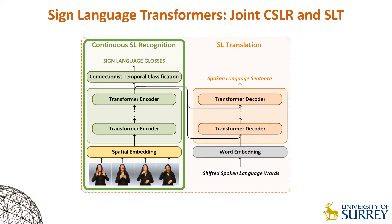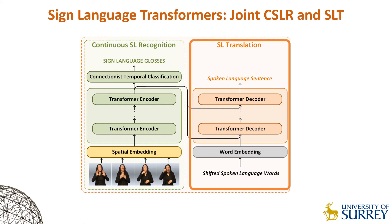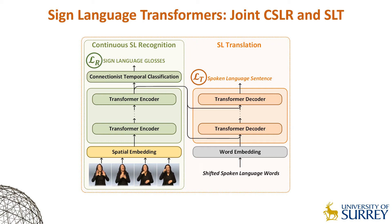We trained the transformer encoders using gloss annotations to recognize sign sequences from continuous videos. As we are utilizing the CTC loss function, we do not require frame-level gloss alignments. We then pass the learned spatiotemporal representations of the signs to transformer decoders, which are trained to generate spoken language sentences one word at a time. Our models are jointly trained using a weighted sum of the recognition loss and the translation loss in an end-to-end manner, thus solving two sequence-to-sequence problems simultaneously.